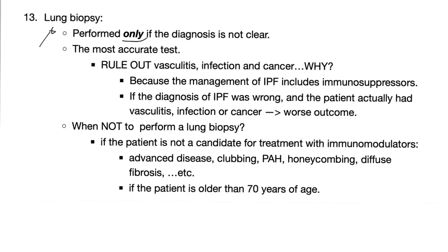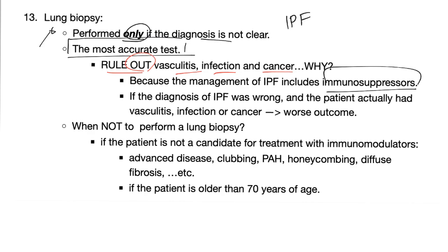Lung biopsy is only performed if the diagnosis is not clear — it's by far the most accurate test, though we don't do it much if the diagnosis is clear. Rule out vasculitis, infection, or cancer first, because if we treat idiopathic pulmonary fibrosis with immunosuppressors such as corticosteroids and the patient actually has an infection, you are making it worse.